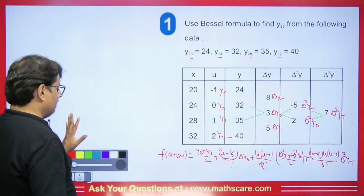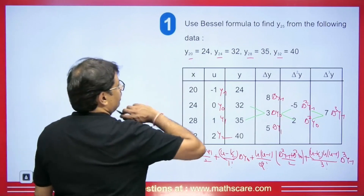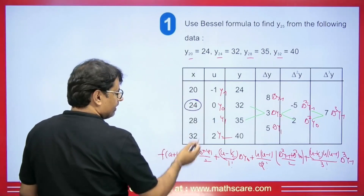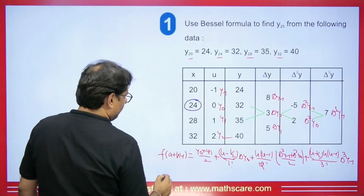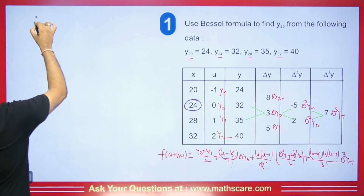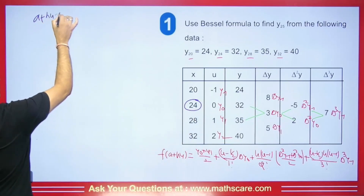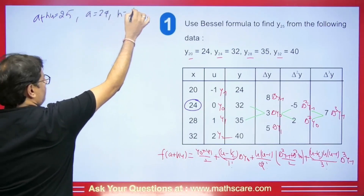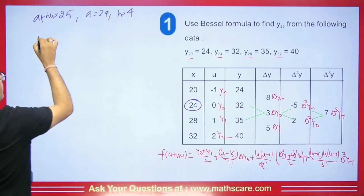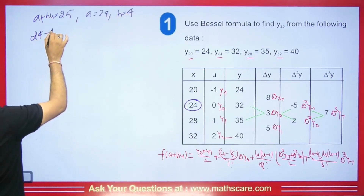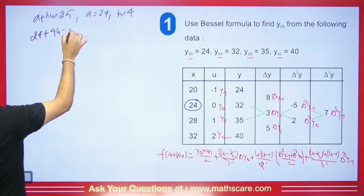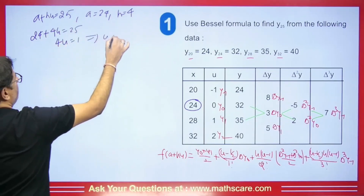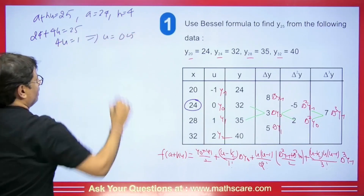Now in this formula, the value we are going to calculate is 25, which is the center. We write A + HU = 25, where A equals 24 and H equals 4. So 24 + 4U = 25, which gives 4U = 1, implying U = 0.25.